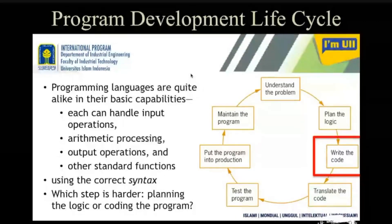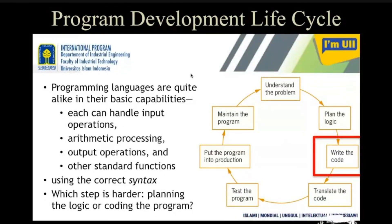Nowadays, languages like Python are very sophisticated — you don't have to worry much. But if you work on C or C++, it will be very hard to understand those concepts. Java is a little easier, but C and C++ are tough. Even earlier, there was machine language and assembly language, which were even harder. Nowadays, coding is not a big problem — you have Python and many other high-level languages where you just write your code with a little bit of knowledge and the problem is solved.